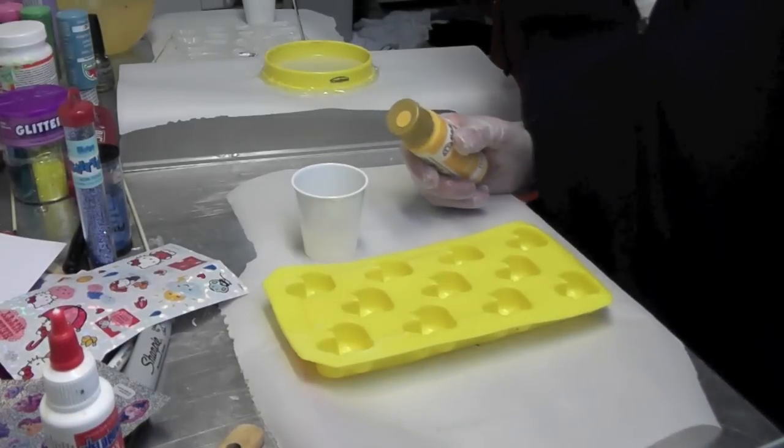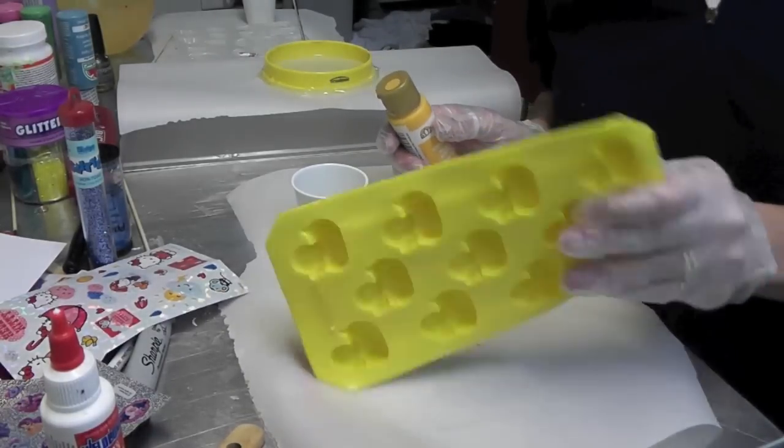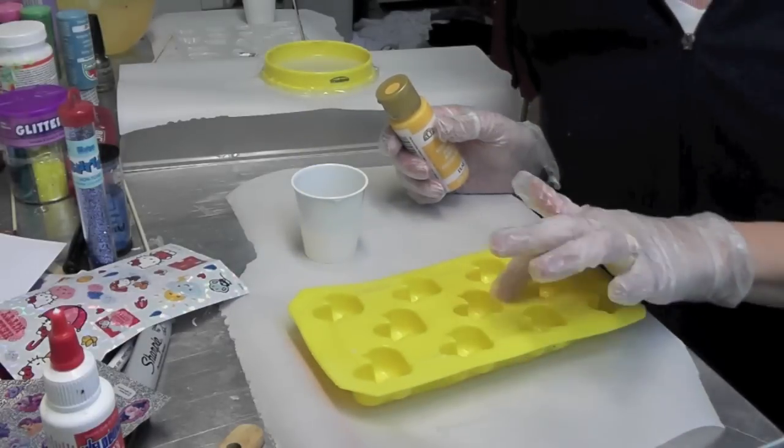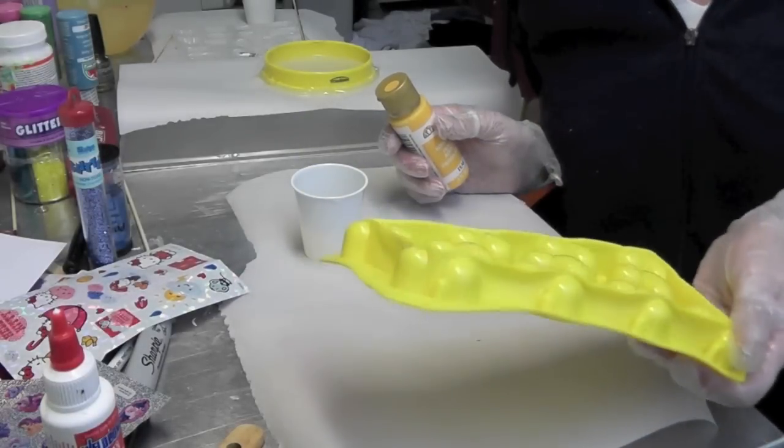Hey everyone, we're back in the craft room today. I found this ice cube tray of little rubber duckies and I'm going to do a resin pour and make a little rubber ducky pendant.